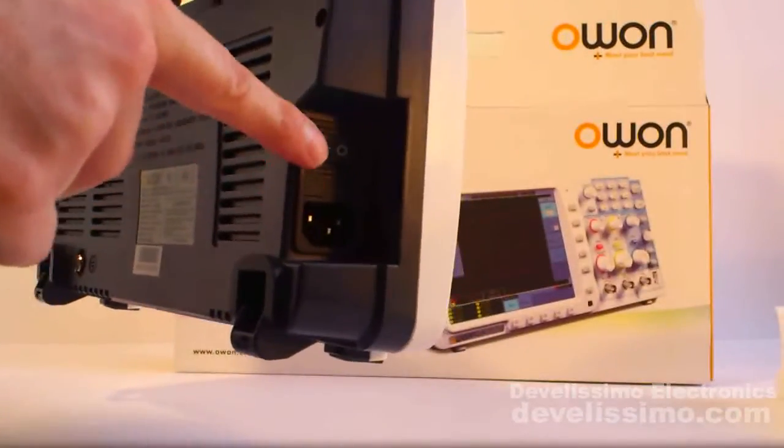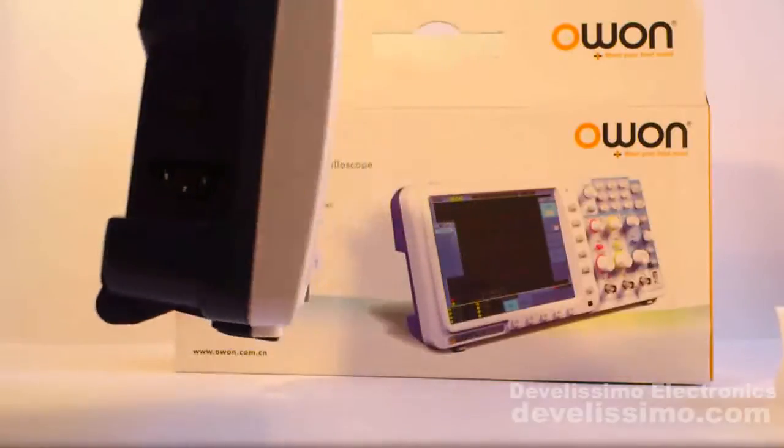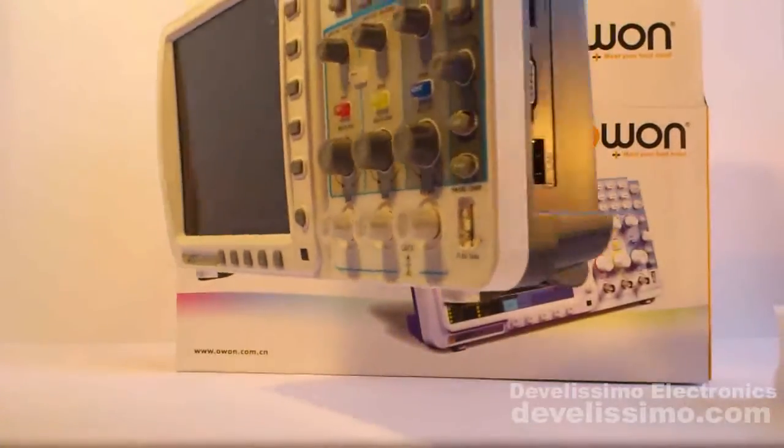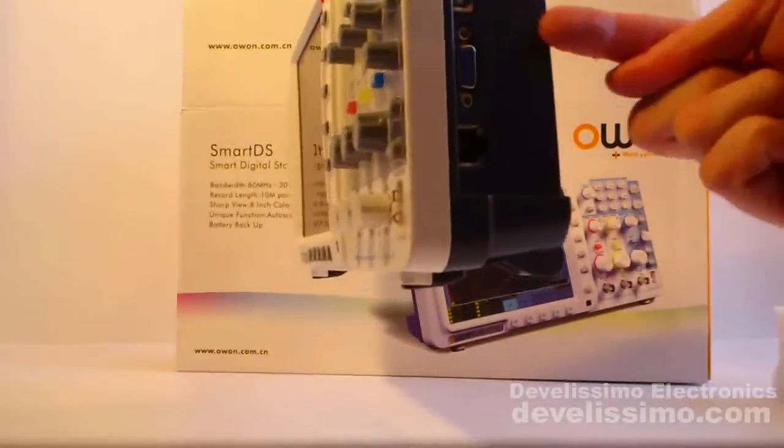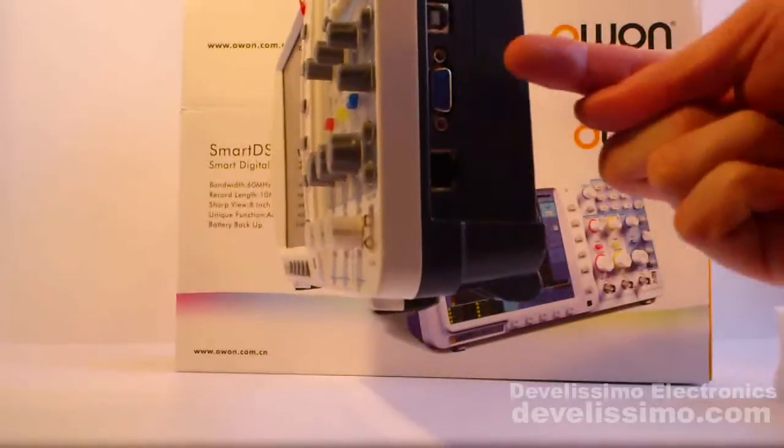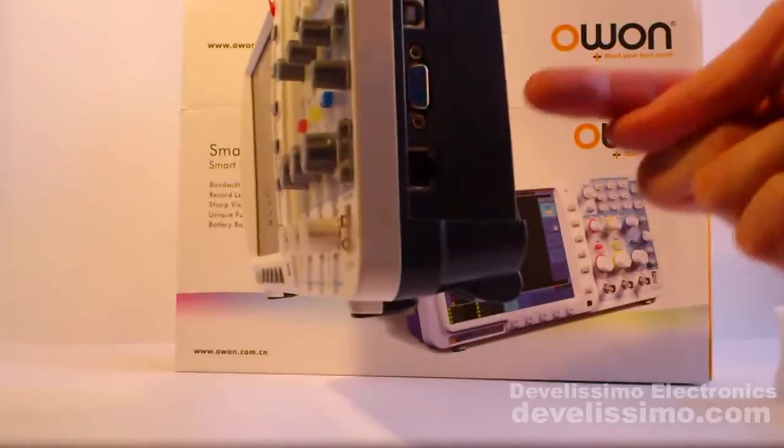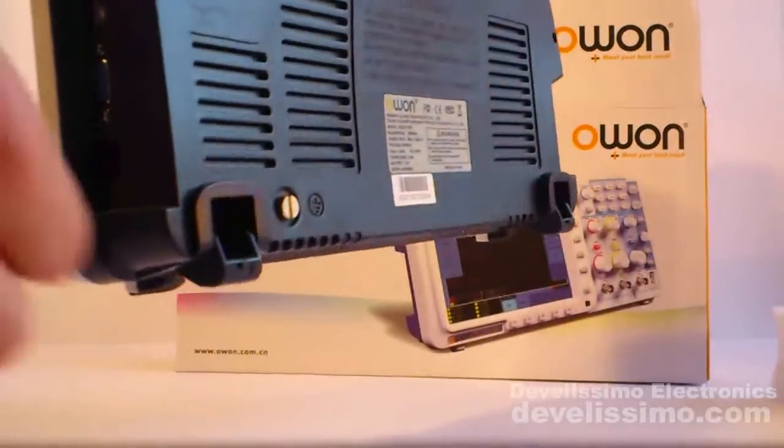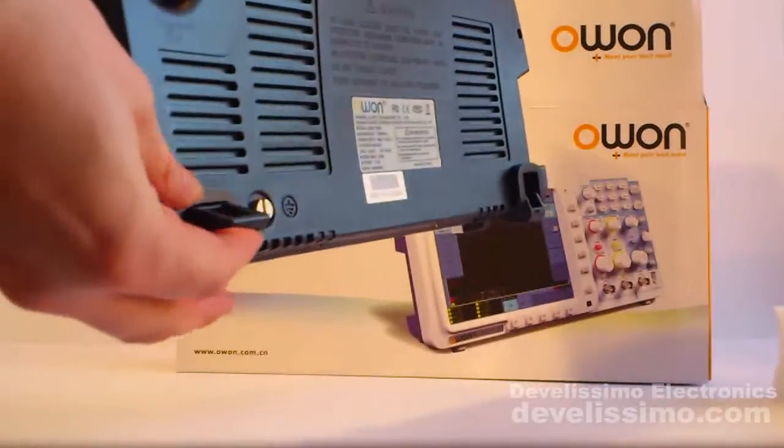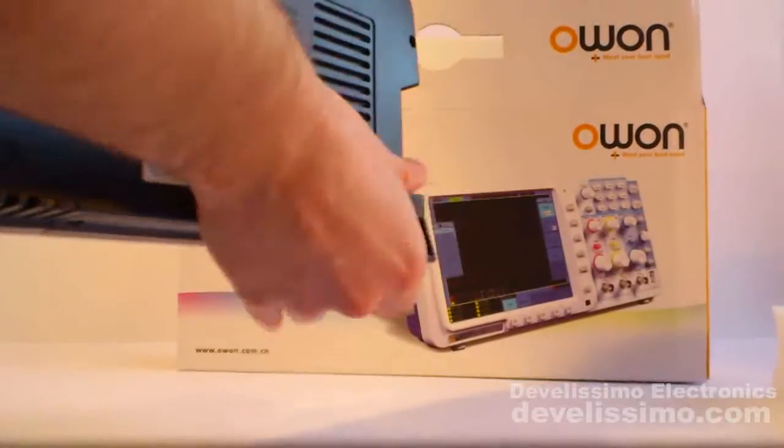The power switch to the left. On the right side of the scopes there are USB connectors by default, VGA graphical output and local area network connectors, optionally choosable if desired in the Develissimo shop.